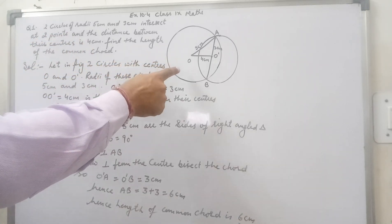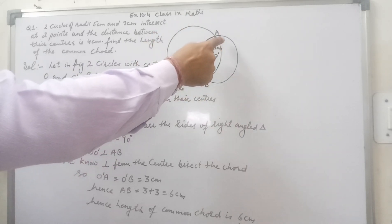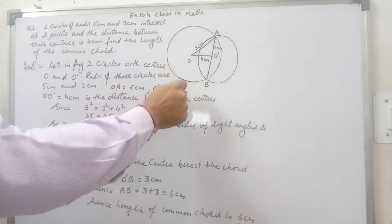In this figure, we have two circles. One is with center O and other circle with center O dash.